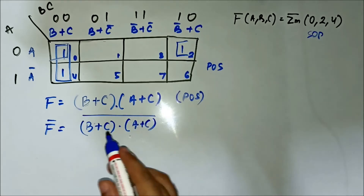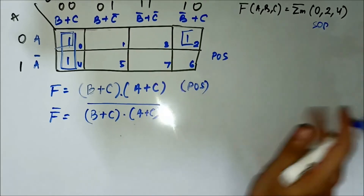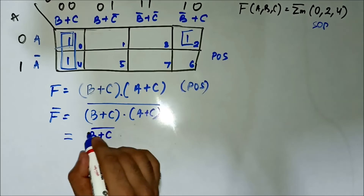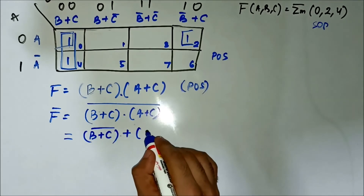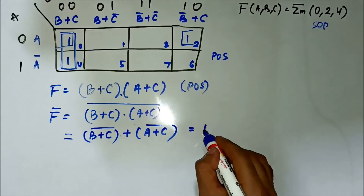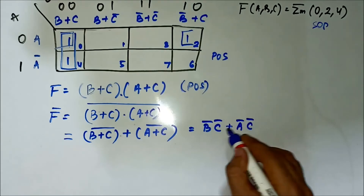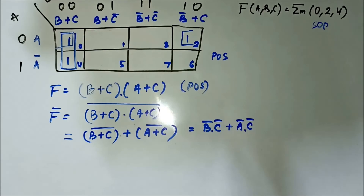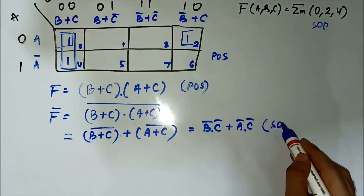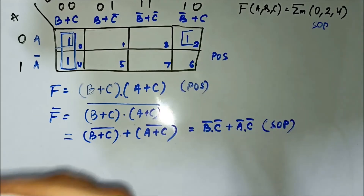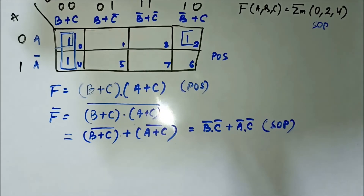Applying De Morgan's theorem, when we complement (B or C)(A or C), we get B̄C̄ + ĀC̄. This is the simplified SOP equivalent expression, obtained simply by applying De Morgan's theorem. That's the fourth question.